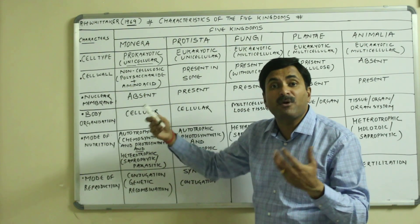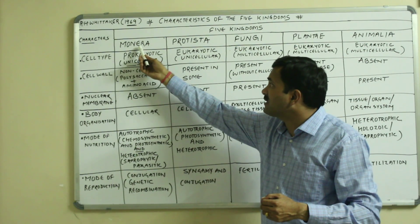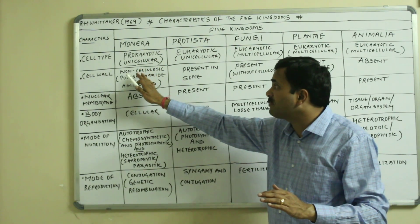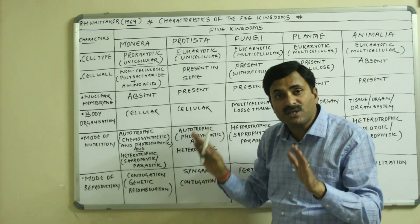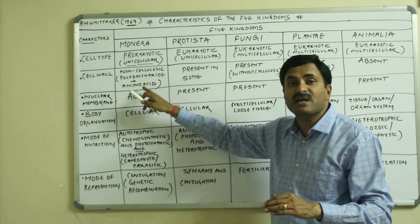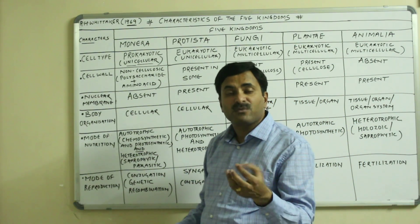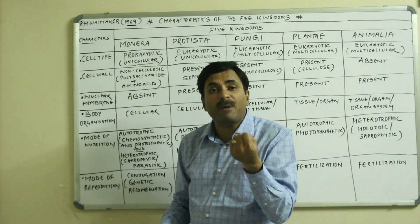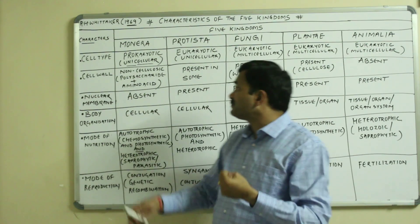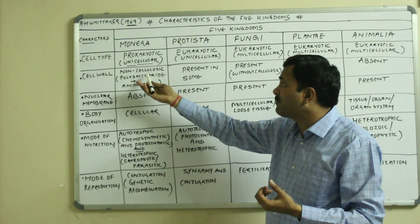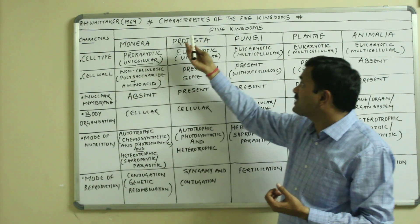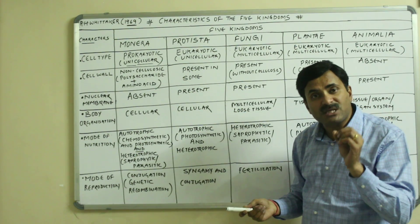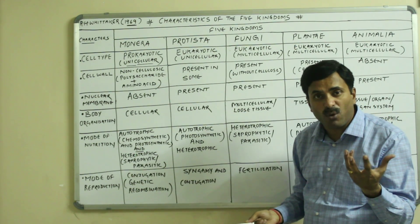Now, what is the cell wall made up of? Monera are having the cell wall, but it is not made up of cellulose — the cell wall is non-cellulosic and made up of polysaccharides and amino acids. In bacteria, the cell wall is made up of mucopeptides or peptidoglycan, which means polysaccharides and amino acids. In Protista, some members have a cell wall while some members do not.